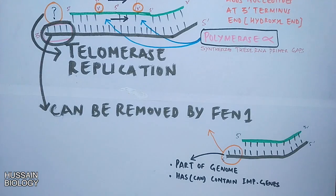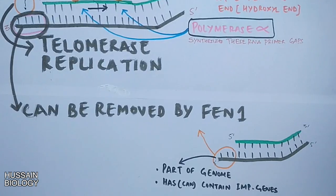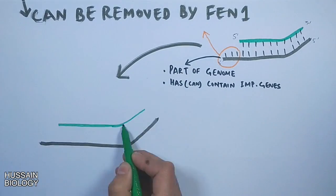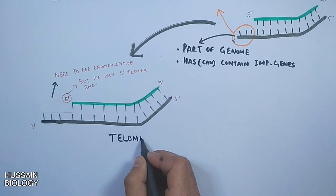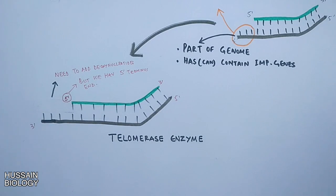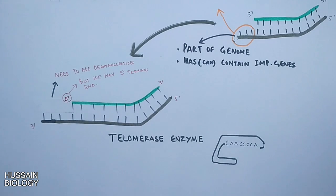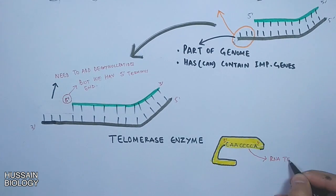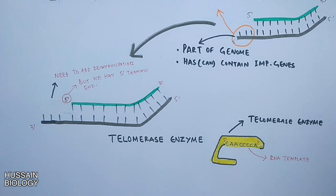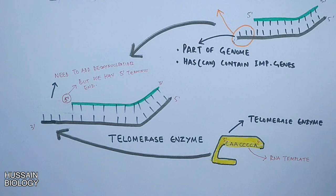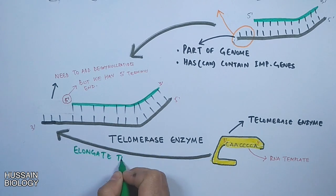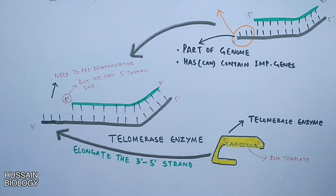This is also the reason for aging. But some cells in our body have overcome this end replication problem by the presence of telomerase enzyme. The telomerase enzyme has its own RNA template, plus it has polymerase activity, with which it can add deoxyribonucleotides to the 3' terminus end. In this case, the telomerase works on the parent strand only, while it elongates the 3' terminus end of the DNA parent strand.